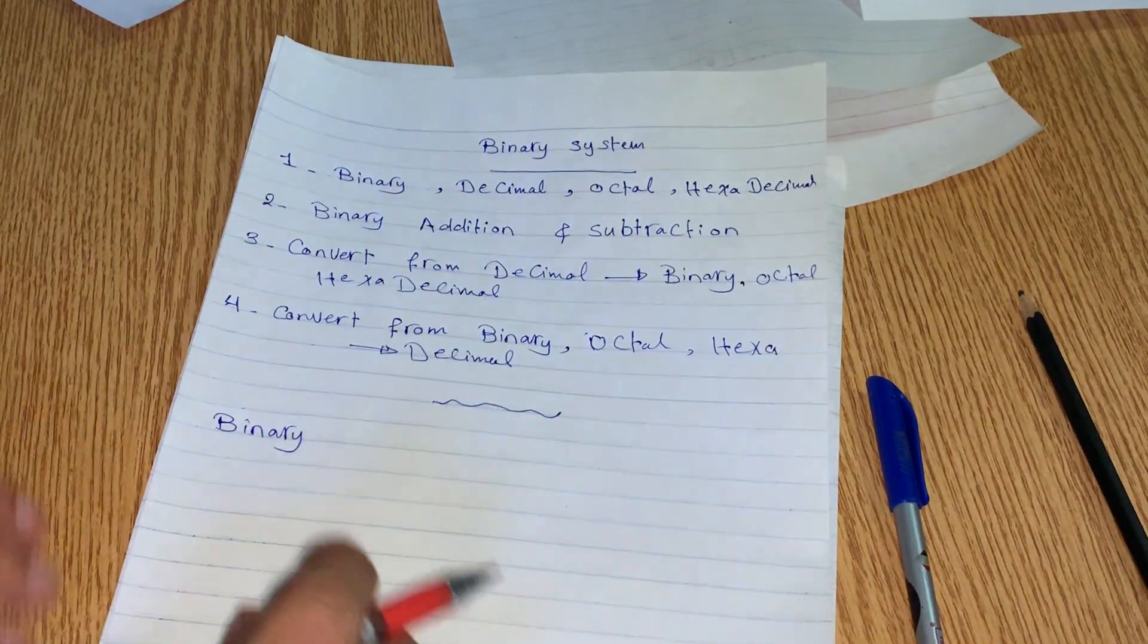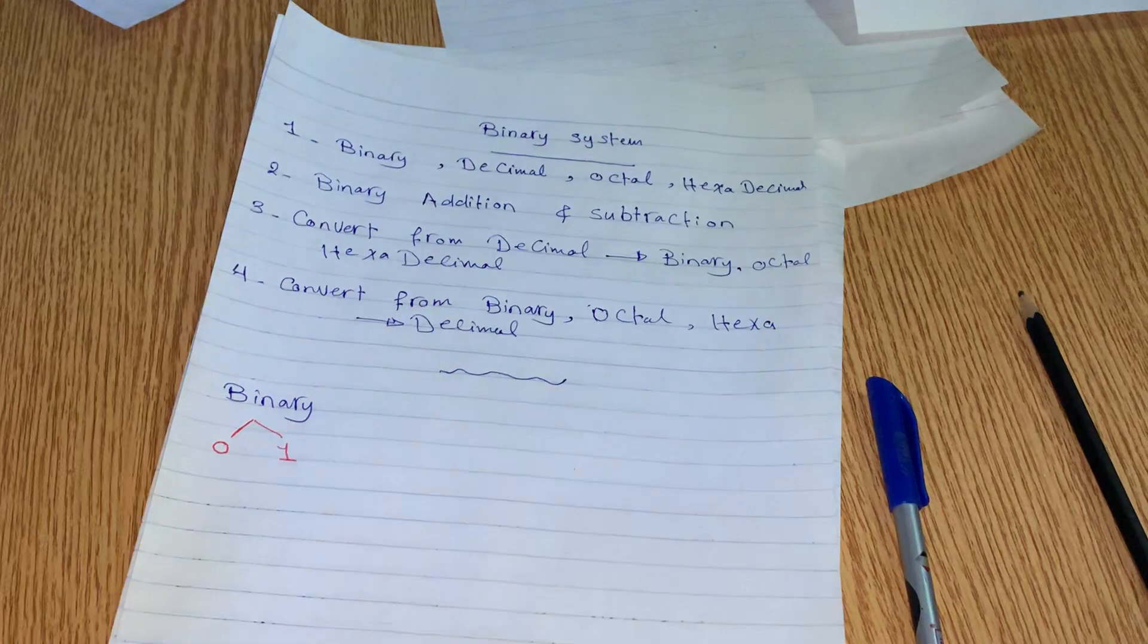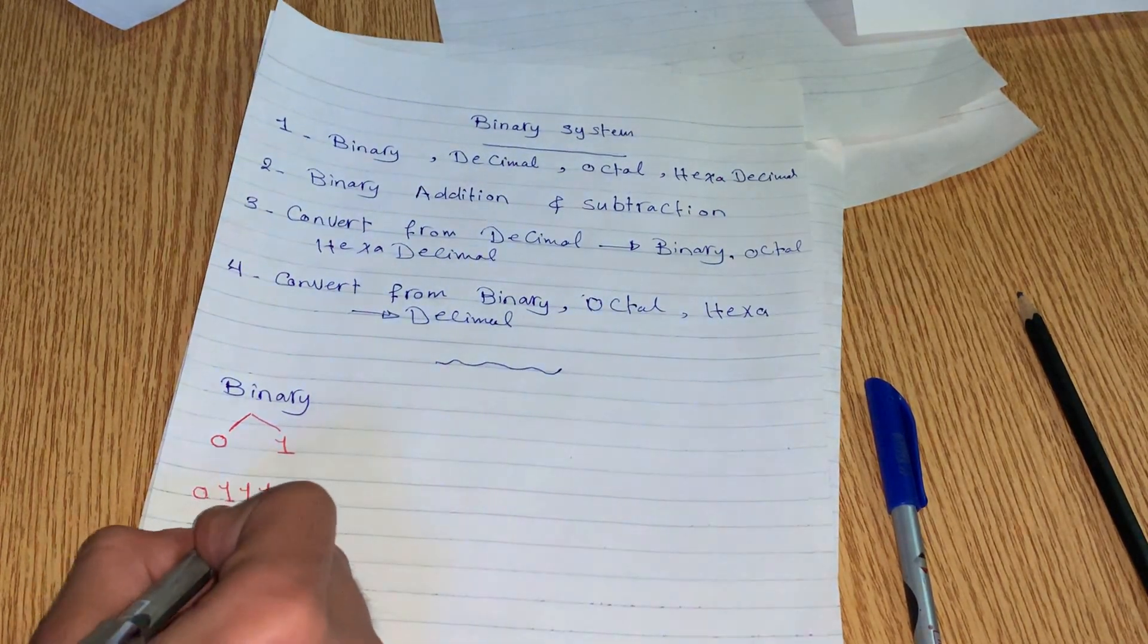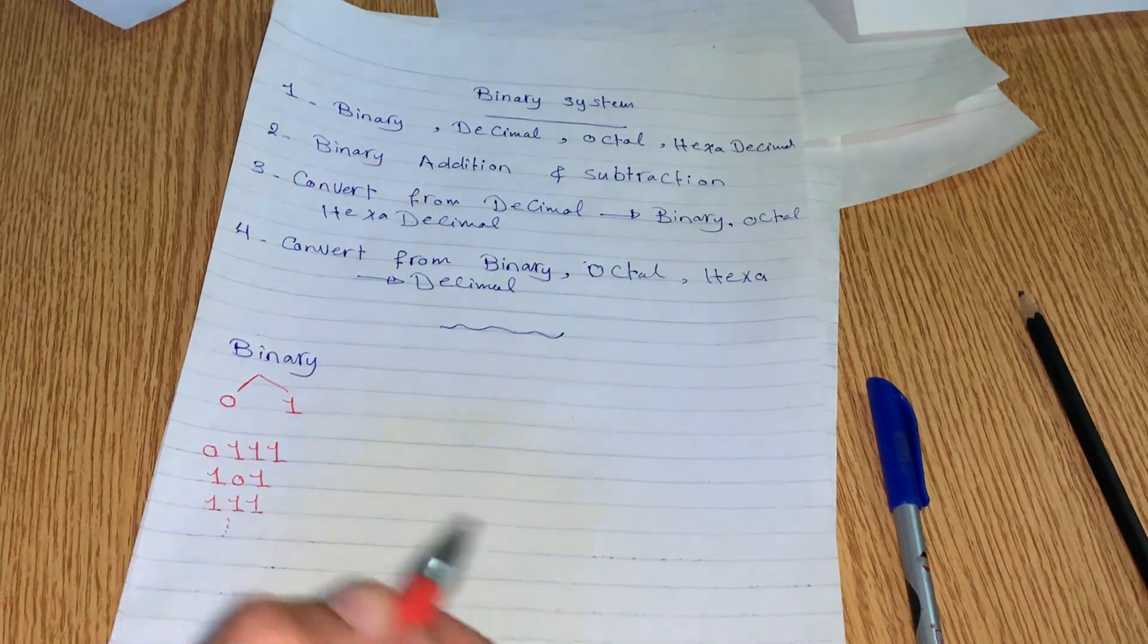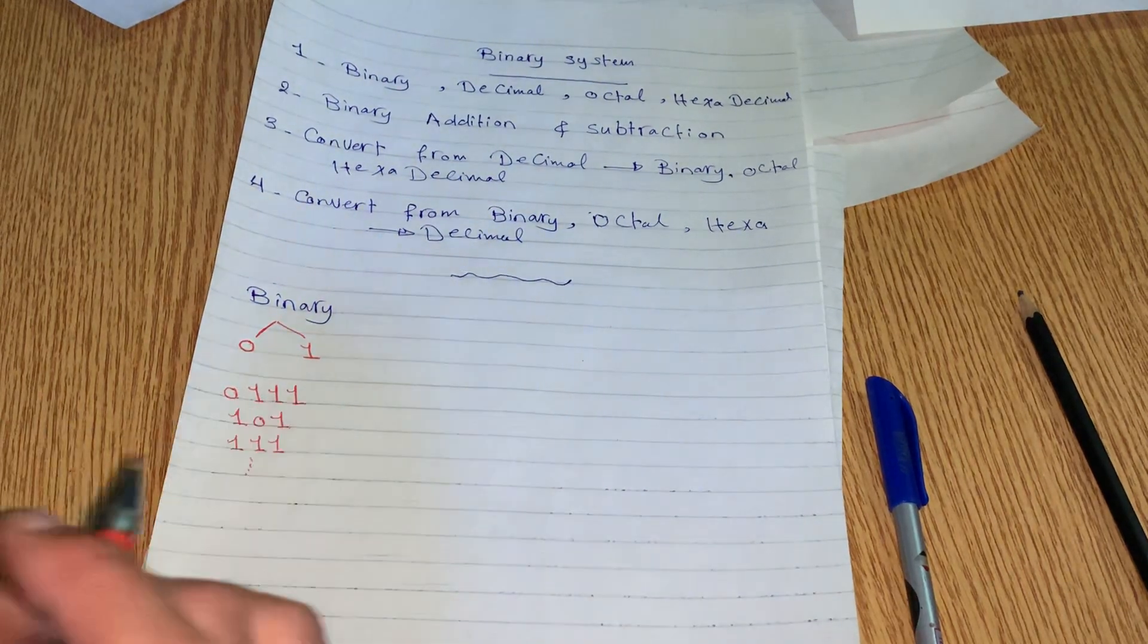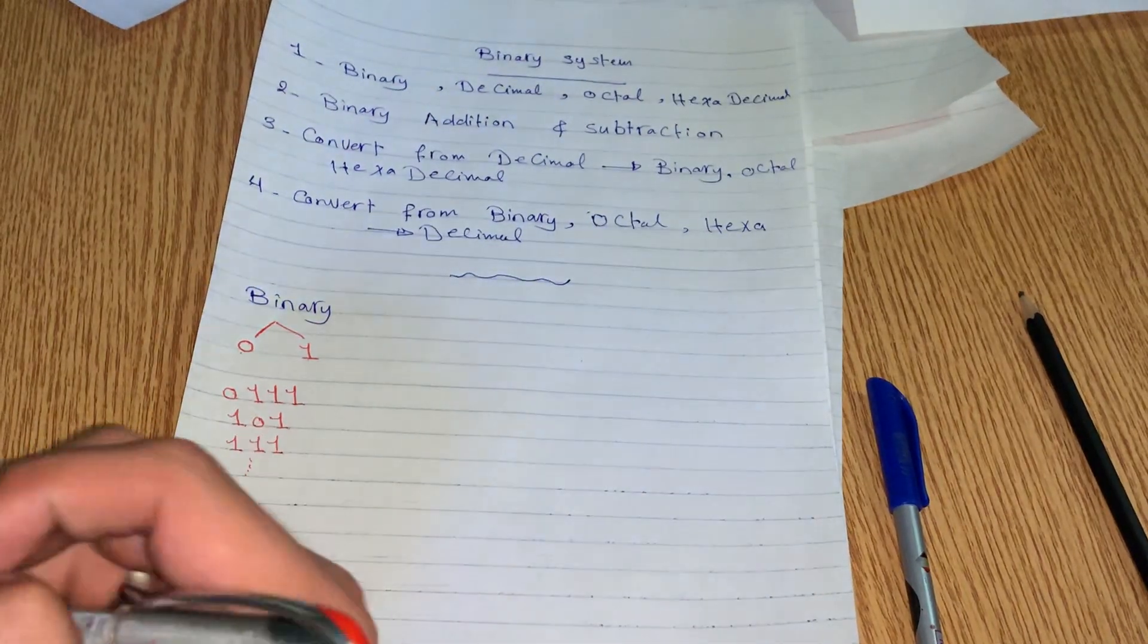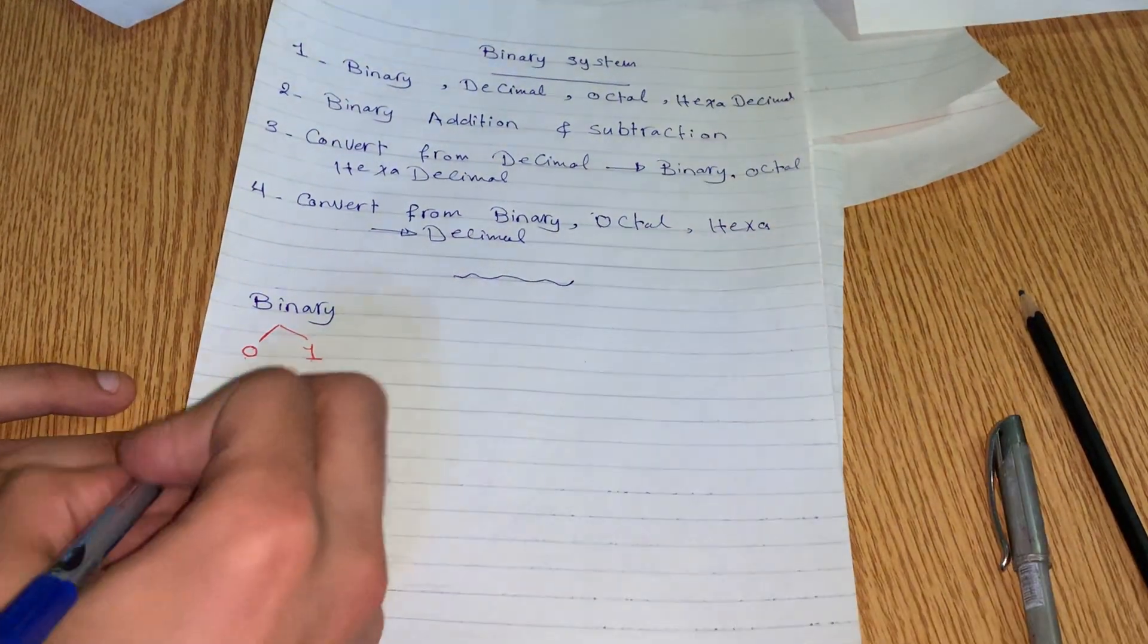The binary is what the computer can use. It will be zero or one. This means the number can simply be composed of zero and one. For example, it could be one zero one. The number can be all zeros. We need to know the base. What does base mean? It means how many digits it can be composed of. Here we say it carries zero or one, so the base will be two. This means the number cannot be composed of anything other than zero or one.